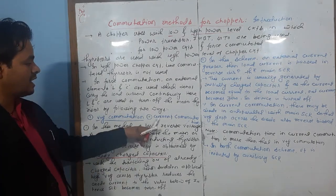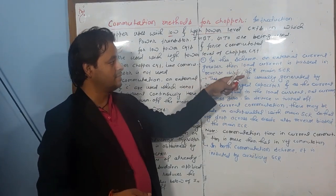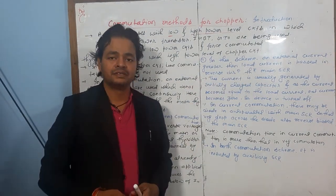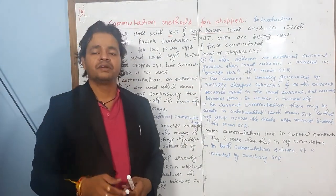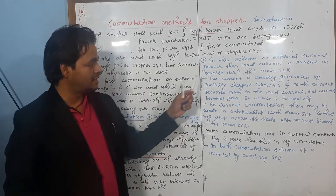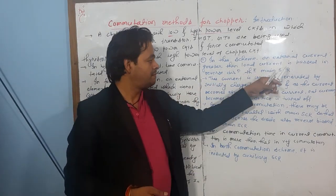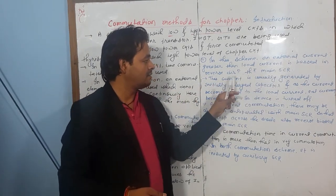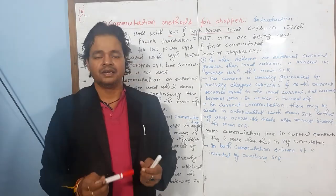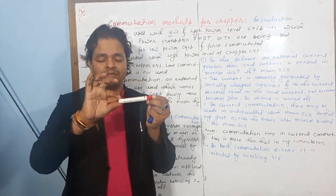In the current commutation technique, a current greater than the load current is passed in the reverse direction through the main thyristor, using an initially charged capacitor to turn the thyristor off.